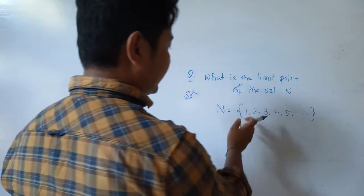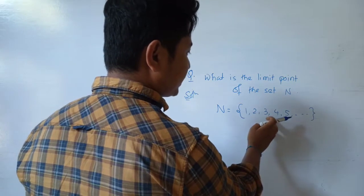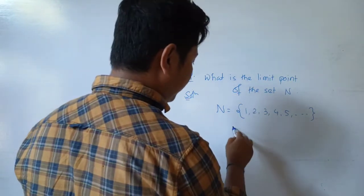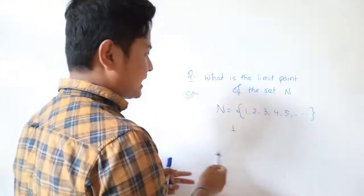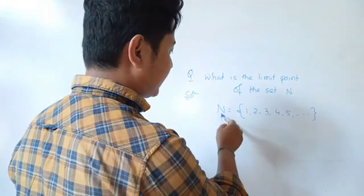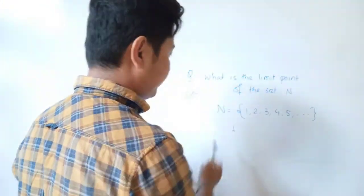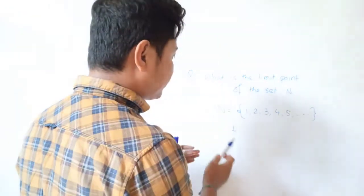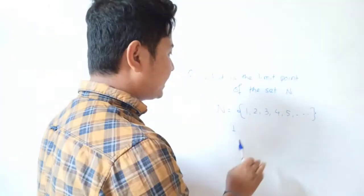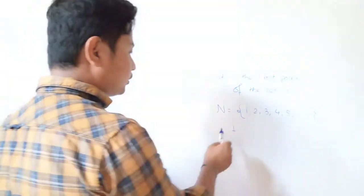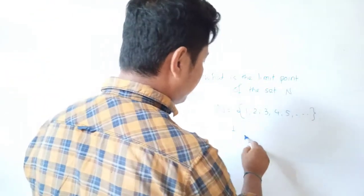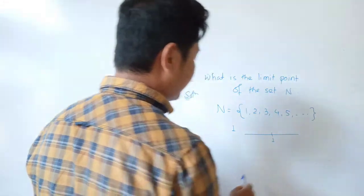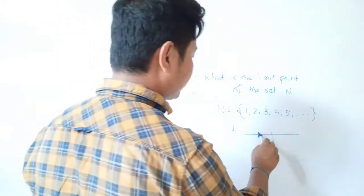We have one, two, three, four, five in the set of natural numbers. Suppose a point — we are going to find a limit point of the set of natural numbers — and we consider the number of elements of that set.